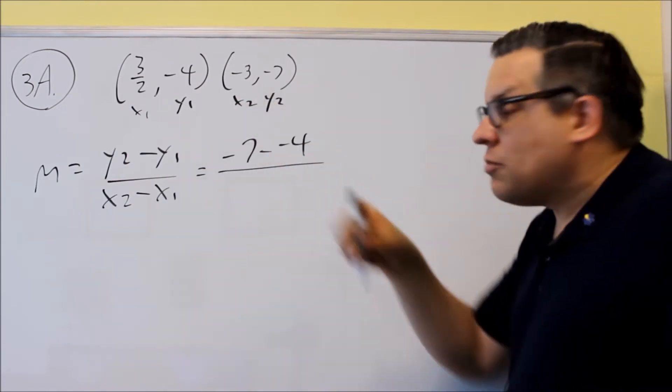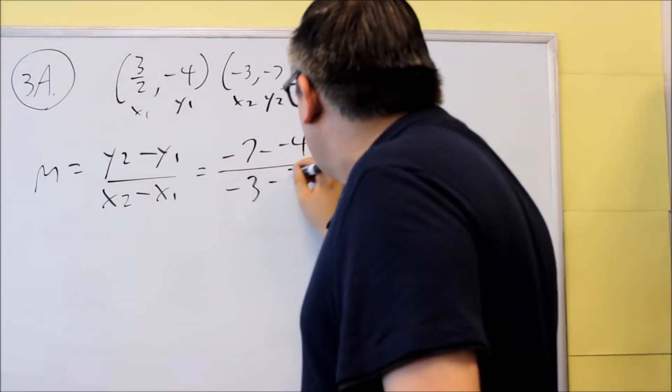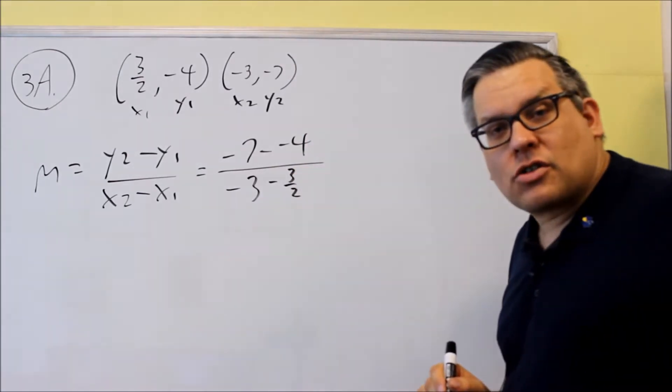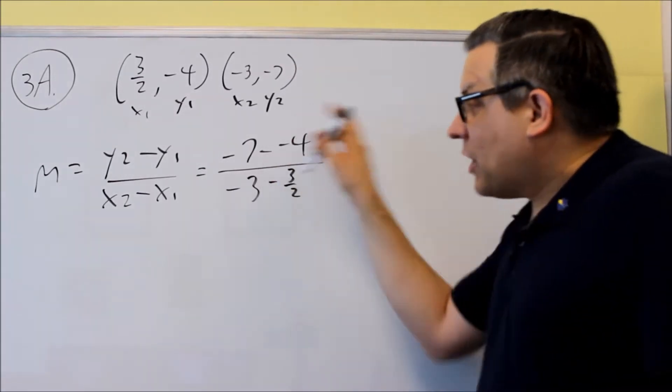On the bottom we have x2 minus x1, so we're going to do negative 3 minus 3 halves. So now we have it set up properly.